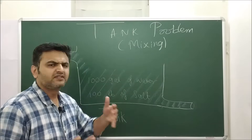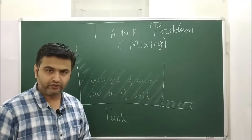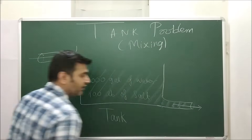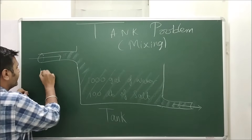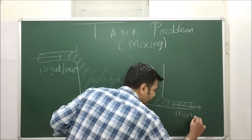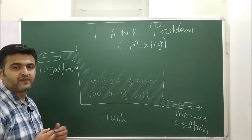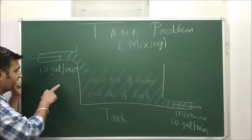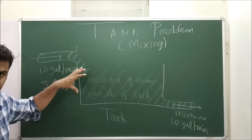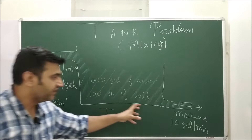Here you have a tank that contains some water — initially 1000 gallons of water and 100 pounds of salt. There is an inlet and an outlet. Water comes in at the inlet at the rate of 10 gallons per minute, and the mixture flows out from the outlet also at 10 gallons per minute. The incoming water carries 5 pounds of salt per gallon — this incoming mixture is also called brine.